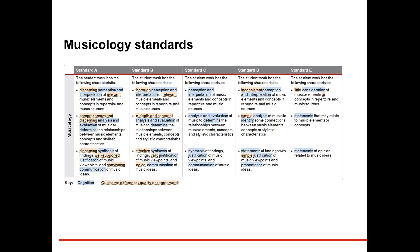Looking at the standards matrix from the syllabus, notice that the cognitions are highlighted in blue while the qualitative words are highlighted in beige. The standards describe how well the objectives have been demonstrated, and the objectives describe what the student should know and be able to do.